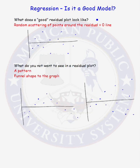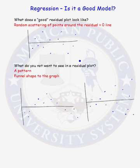What does a good residual plot look like? A good residual plot is one that is a random scattering of points around the residual equals zero line. This is a good residual plot. There's no pattern amongst the residuals as the x observed data values change. It's just a random scattering. That's what you want to see in a residual plot.